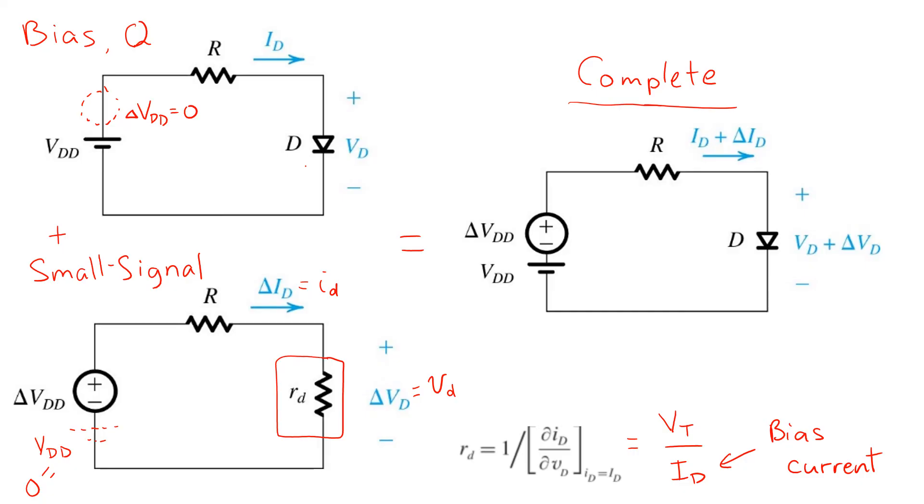This general approach to circuit analysis, where there are small variations around a bias point, is something that we'll come back to again and again. We're using it here with diodes for the first time, because diodes are the first non-linear circuit element that we're confronting, but it's a very useful and important tool for analyzing transistor circuits.